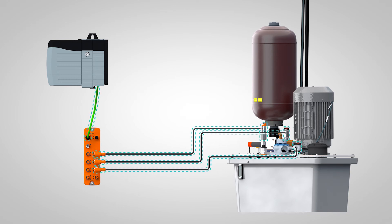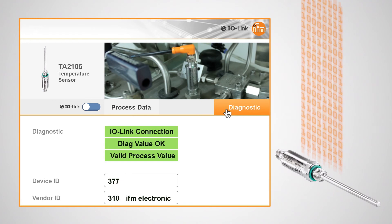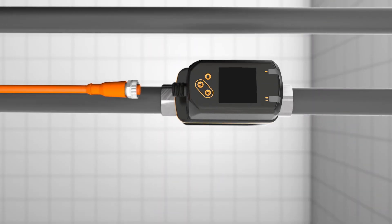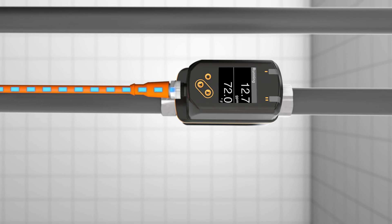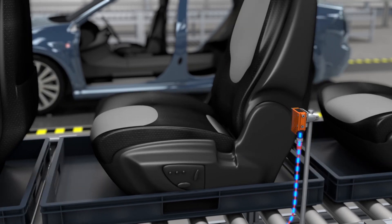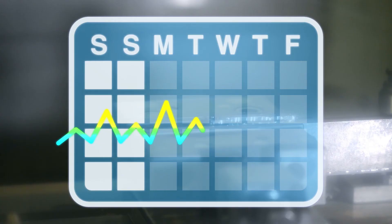In addition, IO-Link offers many other benefits, such as sensor diagnostics, plug-and-play sensor replacement, remote sensor parameterization, and predictive data that helps operators make better decisions to improve plant efficiency.